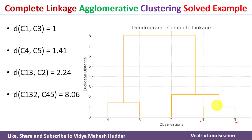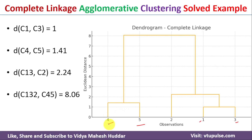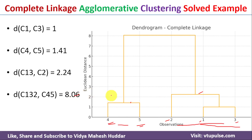Now we draw the dendrogram. First we merge clusters C1 and C3 with merging cost 1. Next we merge C4 and C5 with merging cost 1.41. Then we merge C13 and C2 with merging cost 2.24. Finally we merge cluster C132 with C45 with merging cost 8.06.